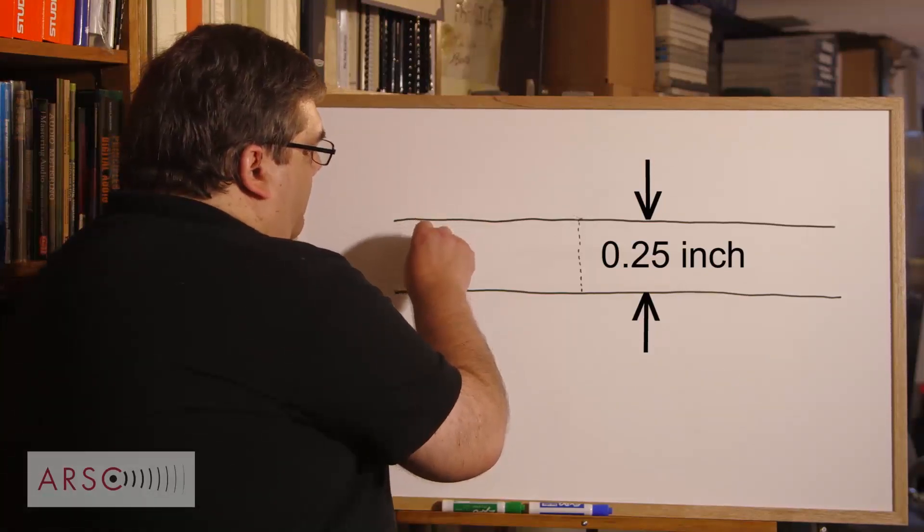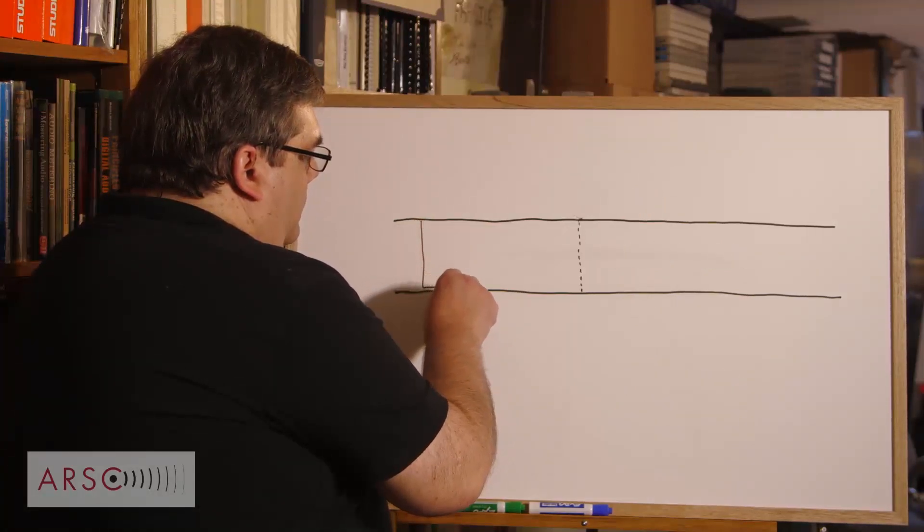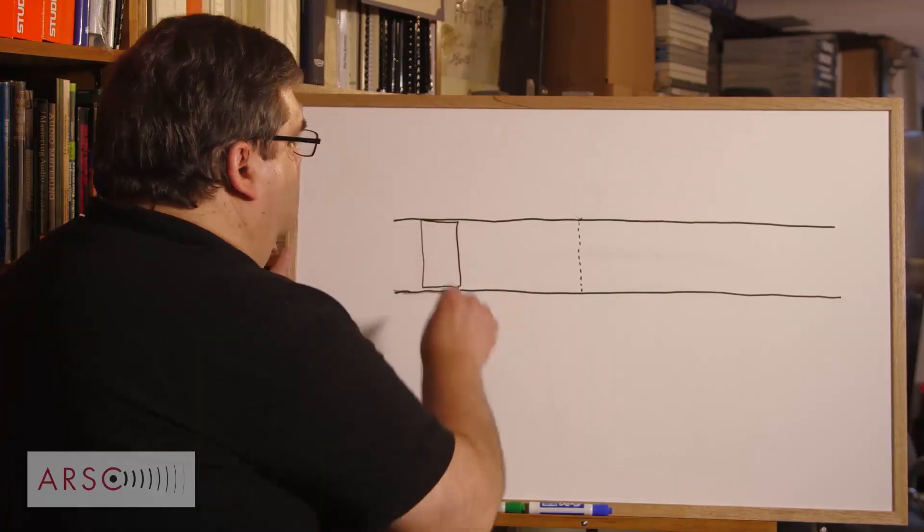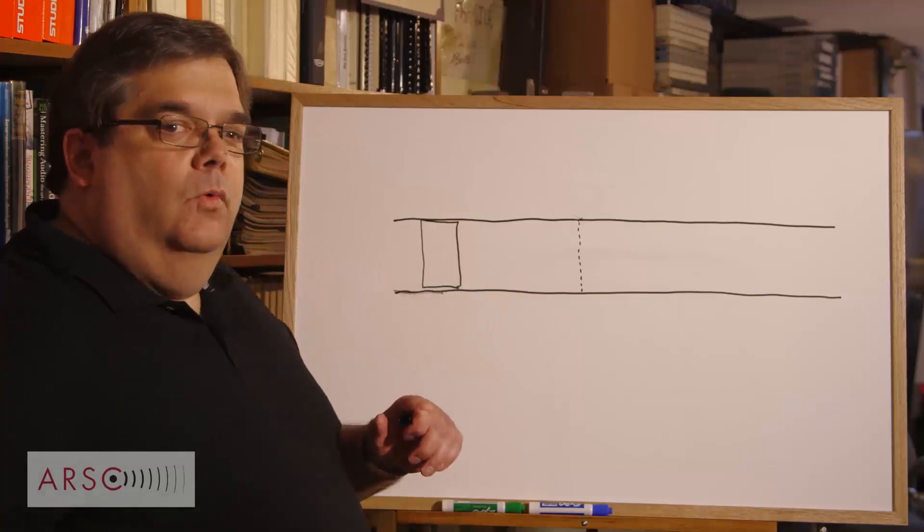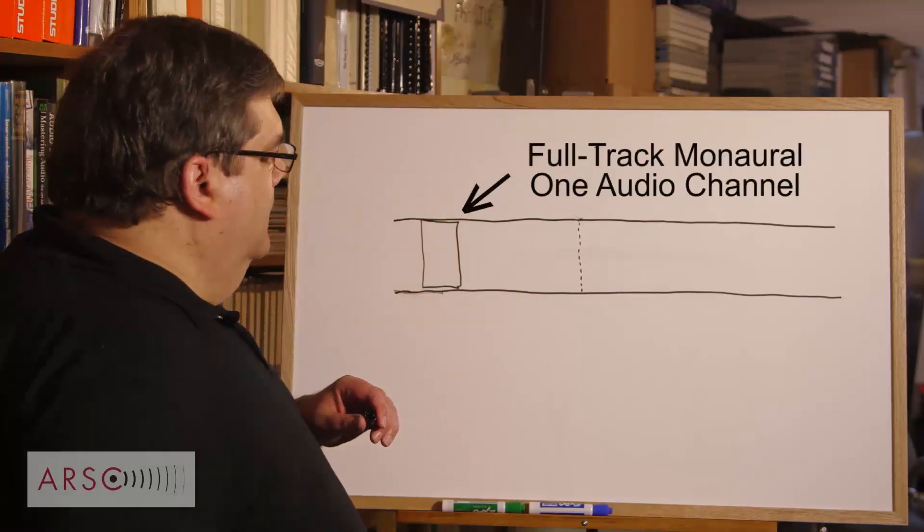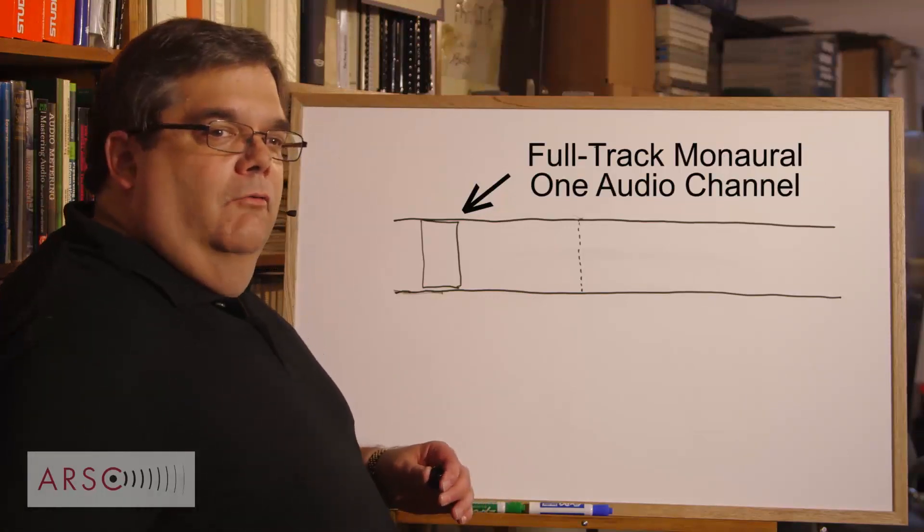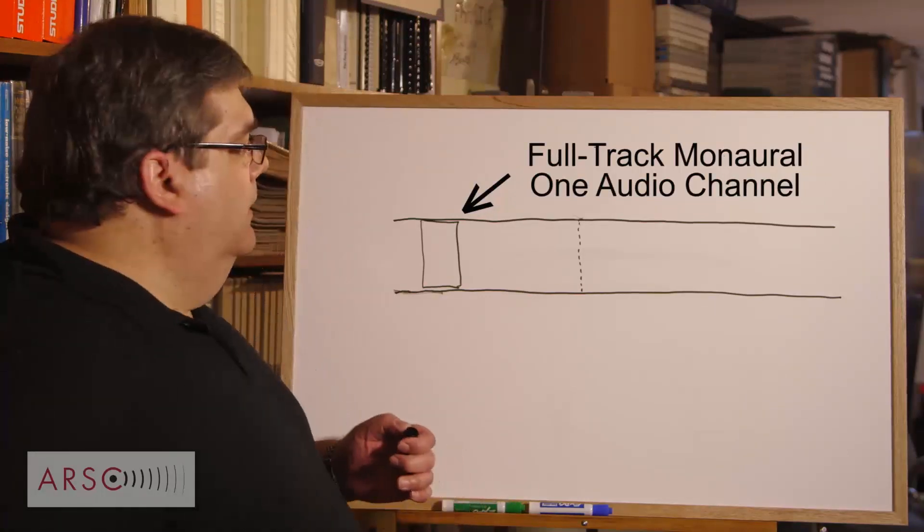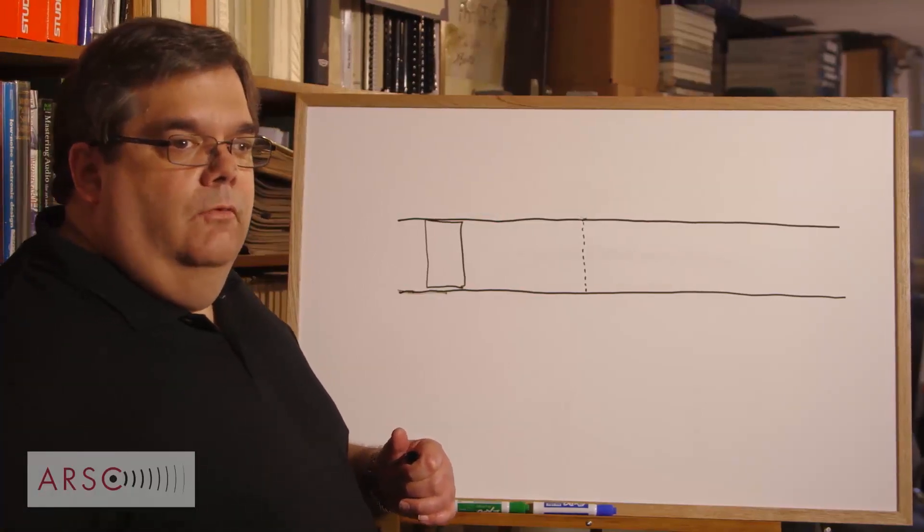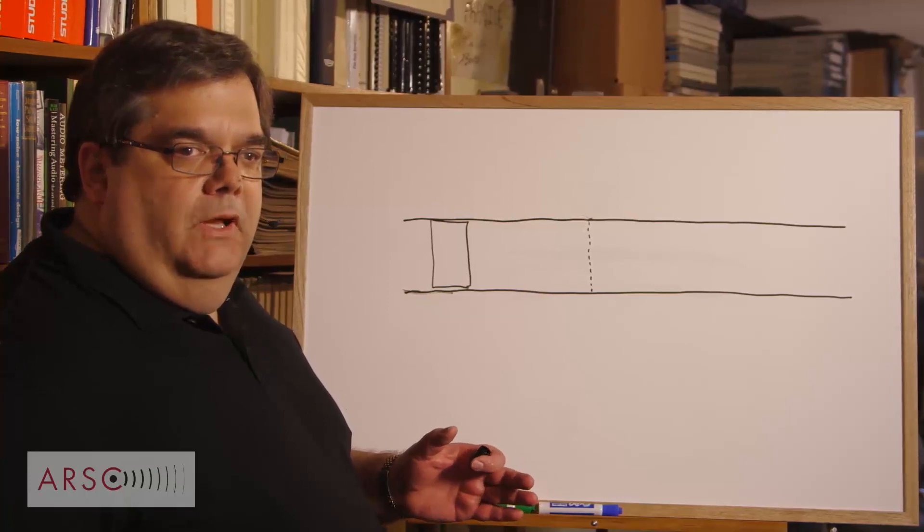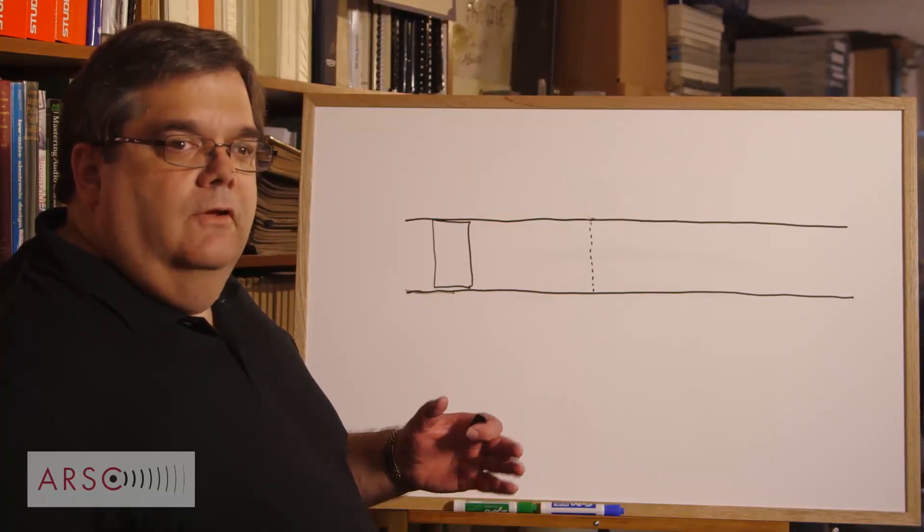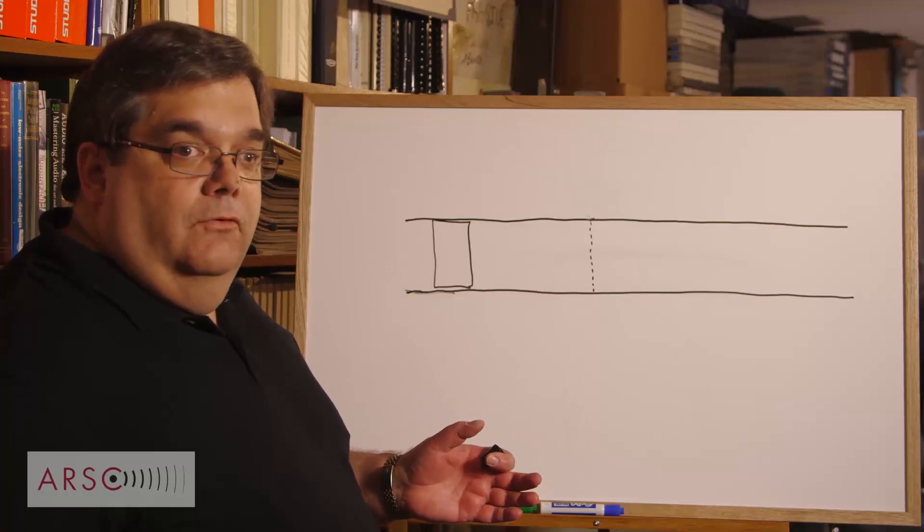So, the first way we populated this was a full track head. This was the entire width of the tape used for the audio. Well, that's really useful for mono. But in the mid-40s, the Germans were experimenting with stereo, and in the very early 50s, the Americans were experimenting with stereo.